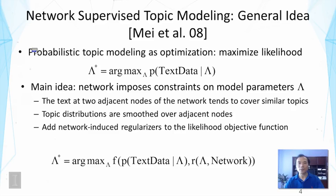Technically, what we can do is simply add network-induced regularizers to the likelihood objective function as shown here. Instead of just optimizing the probability of text data given parameters lambda, we're going to optimize another function f. This function combines the likelihood with a regularizer function called r. The regularizer is defined on the parameters lambda and the network. It tells us what kind of parameters are preferred from network constraint perspective. This is, in effect, implementing the idea of imposing some prior on the model parameters. We're going to combine the two in one single objective function.